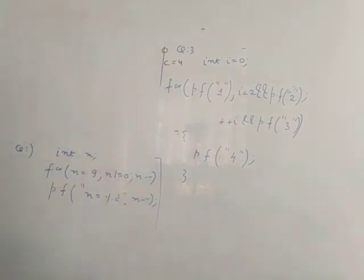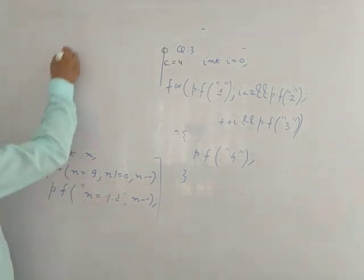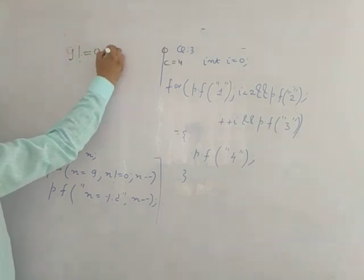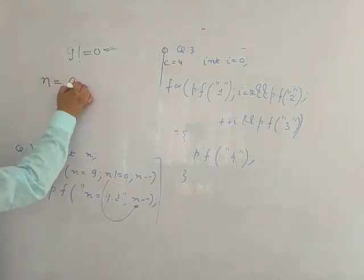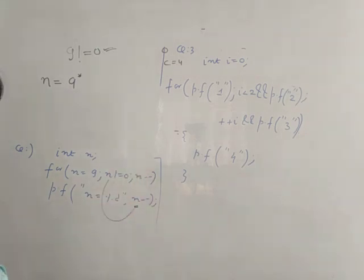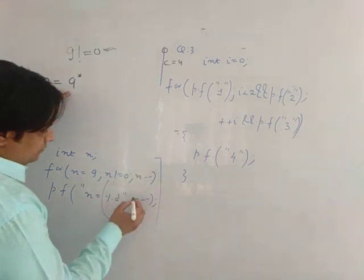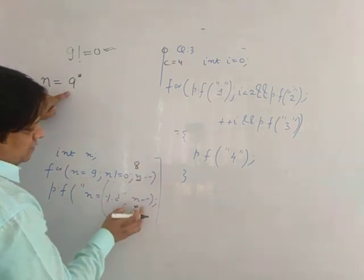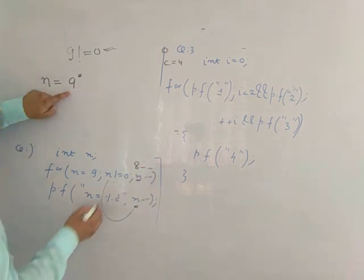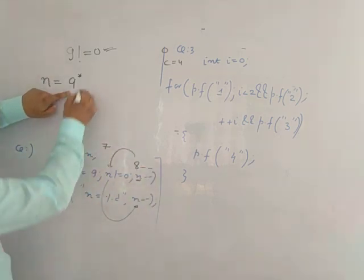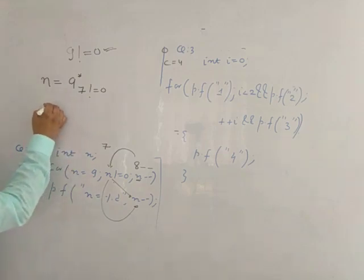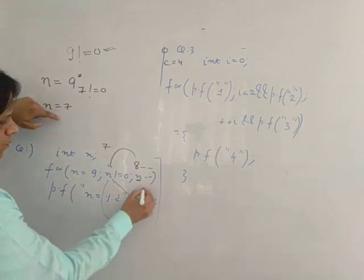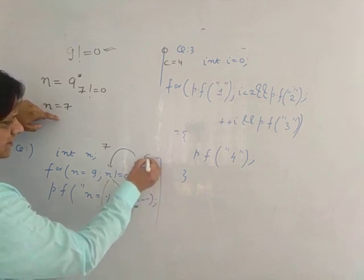Moving on to the next question: n equals 9, condition n not equal to 0. The condition is true, so you go down and print n--, which is post-decrement. The first value printed is n = 9. When the loop comes back the value decreases; it is post-decrement so the first print is 9, then when it comes back the value is 8, then 8-- so next time it is 7.